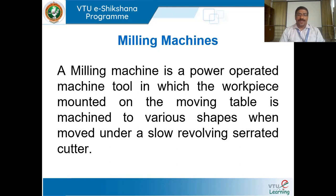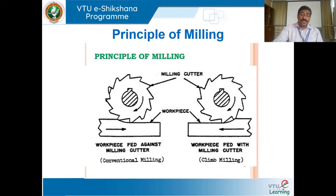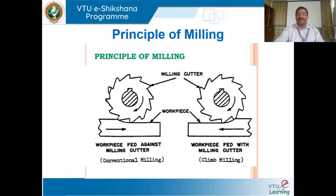In the previous session, we had discussed about milling machines — what is a milling machine, a power-operated machine tool wherein the job is moved against the revolving serrated cutter. We discussed different types of operations and the principle of milling. There are two principles: conventional milling, where the workpiece is fed against the milling cutter, and climb milling, where the workpiece is fed in the direction of rotation of the milling cutter.